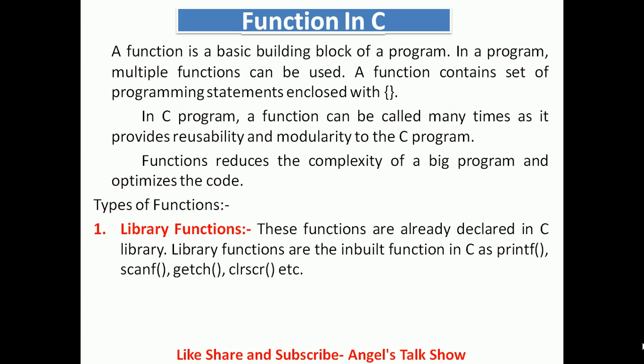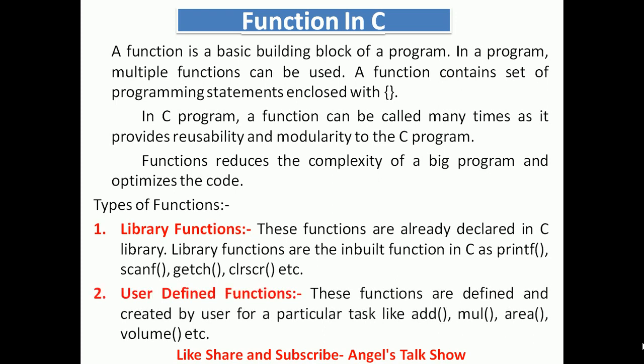We have several types of functions in C programming. The first one is library functions — these functions are already declared in the C library. Library functions are inbuilt functions in C, and examples of library functions are printf, scanf, getch, clrscr, etc. The second one is user-defined functions — these functions are defined and created by the user for a particular task, like addition, multiplication, area, volume, etc.